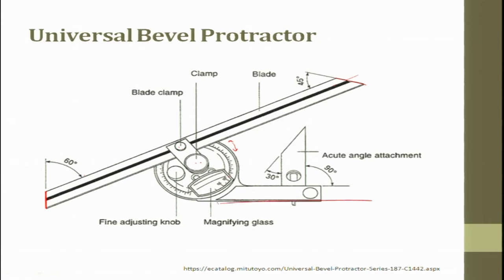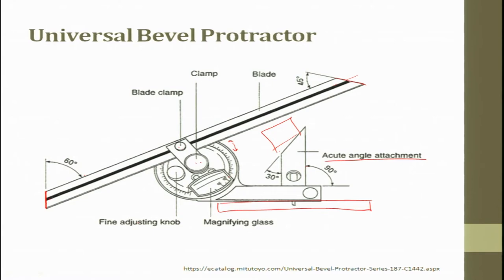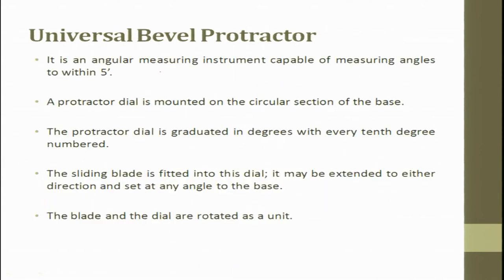There is a reference plane — you can place the entire scale with respect to this reference plane. You can also place the object using an acute angle attachment, which is at 90 degrees and 30 degrees, to place and dial the work piece flat, then rotate the protractor to measure the reading. It is an angle measuring instrument capable of measuring angles within 5 minutes.